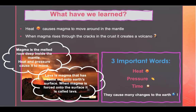Boys and girls, magma and lava are kind of confusing. Magma is molten or melted rock deep inside the mantle. Heat and pressure cause it to move, and when the pressure is too much, the magma is forced out onto the earth's surface. Lava is magma that has come out onto the earth's surface. When magma erupts through cracks in the crust, it is called lava — the red-orange material you can see coming out of a volcano.